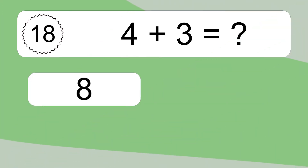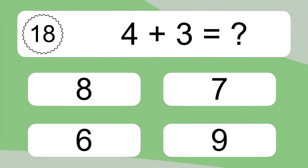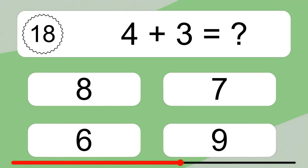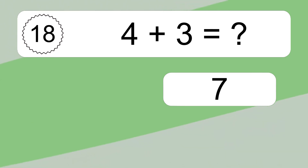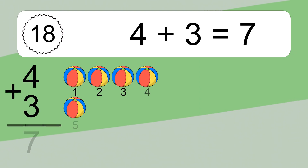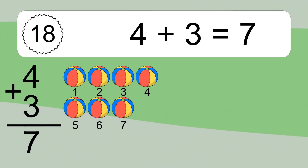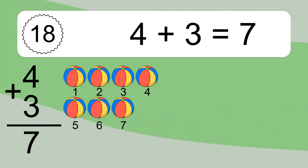4 plus 3 equals what? 4 plus 3 equals 7. Let's count it: 1, 2, 3, 4, 5, 6, 7.